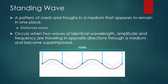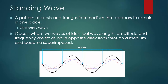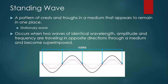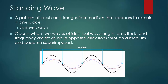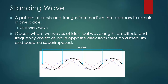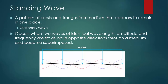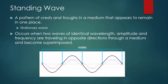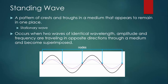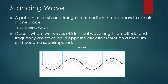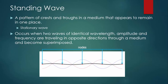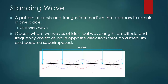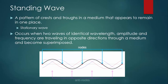In between the nodes, the waves experience varying degrees of constructive interference. Unlike the nodes — which are always at maximum destructive interference — the red and blue waves fluctuate from maximum positive constructive interference to maximum negative constructive interference. This is what causes the pattern of crests and troughs. When the red and blue waves are crests, you get a crest; when there are troughs, you get a trough. These areas in between the nodes are called antinodes.